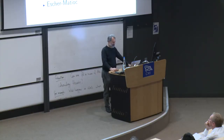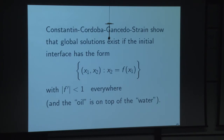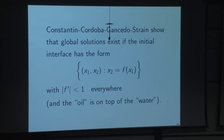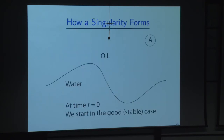Some previous work on Muscat: if the initial data are small and in the stable regime — water underneath — then global smooth solutions exist. 'Small' doesn't have to be extremely small: if the interface is a graph x₂ = f(x₁) with slope always less than 1 in absolute value and oil is on top of water, global solutions exist. So to get a singularity in finite time, the data can't be too moderate. We're going to produce a singularity for this problem and prove rigorously that it forms.